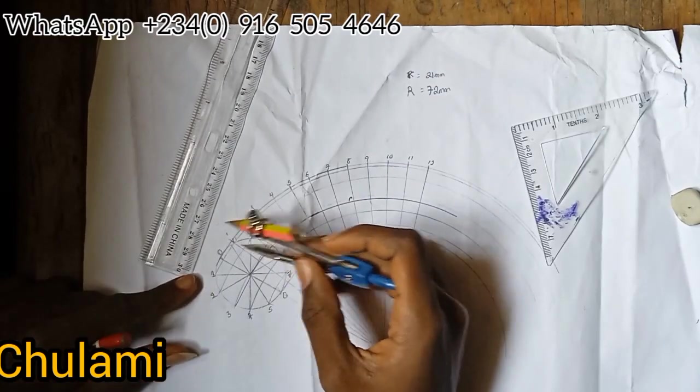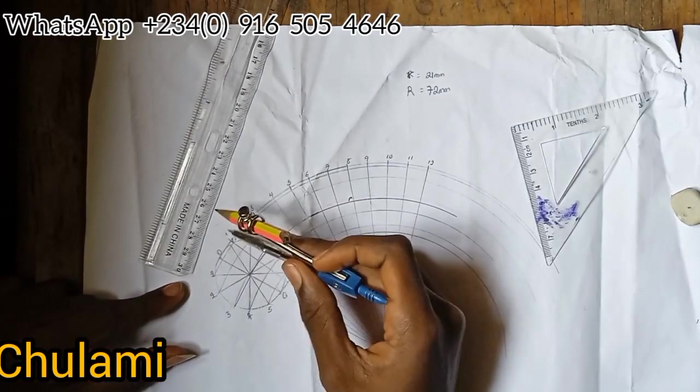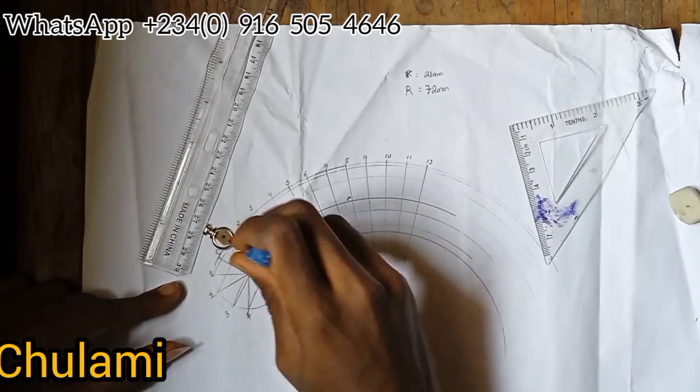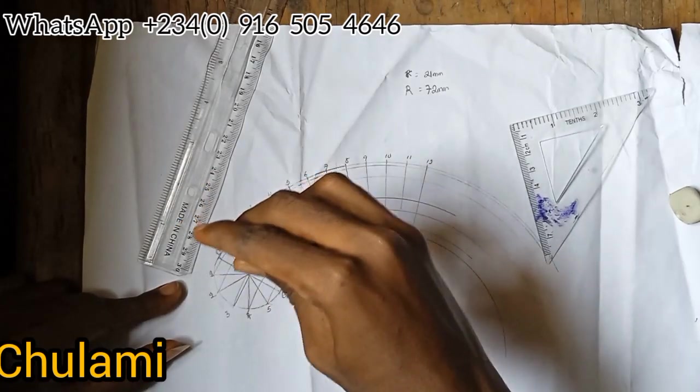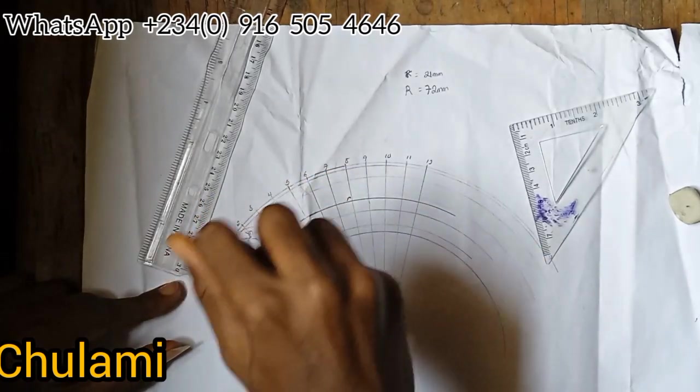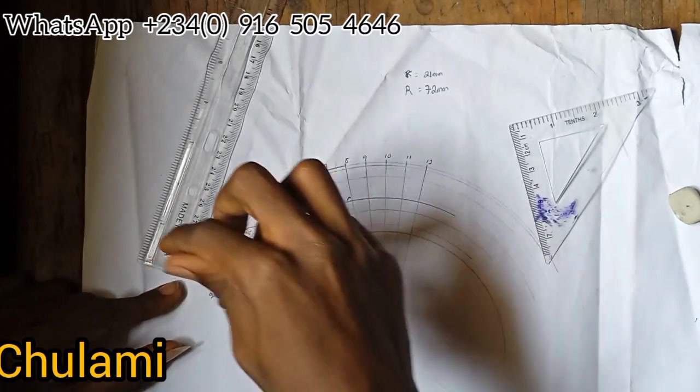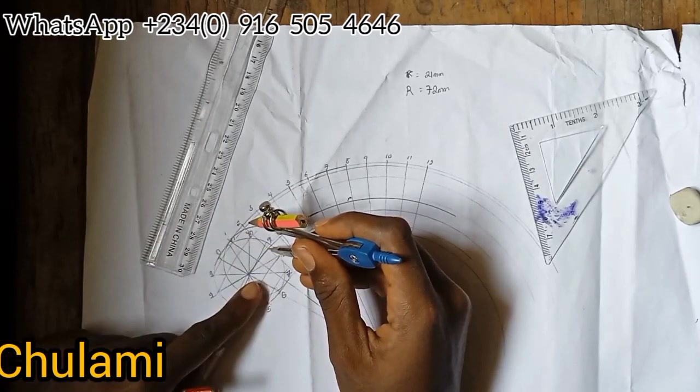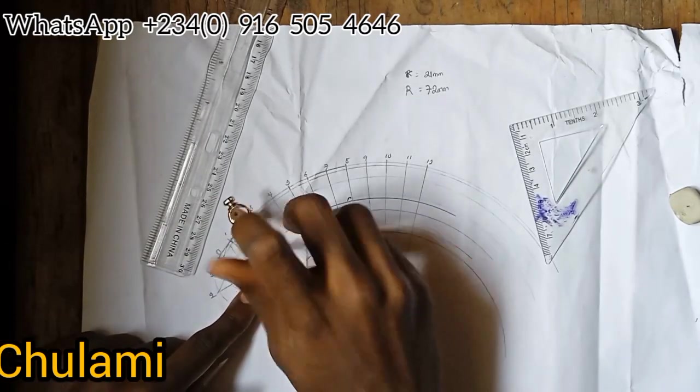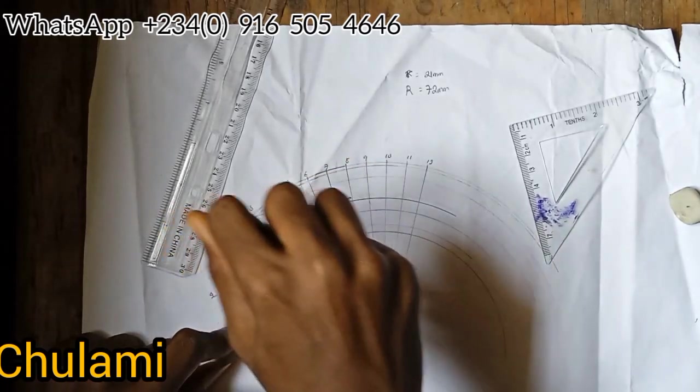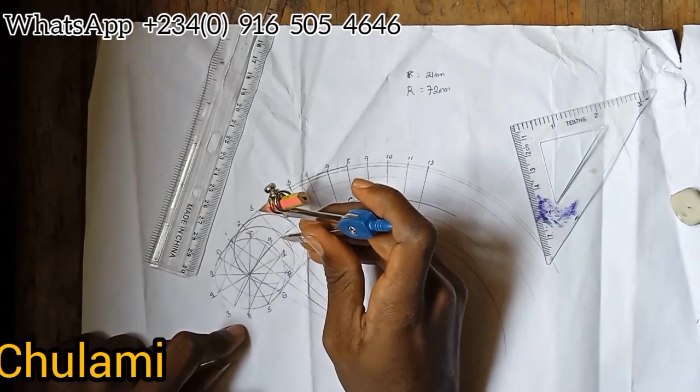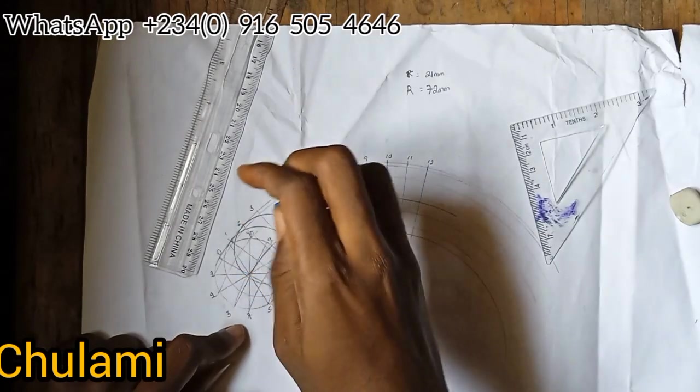Now where one and the center arc meet, I'll pin there and get to one and draw a circle. Where the center arc and line two meet, I'll pin there and get to two and draw a circle. I'm repeating the same process for three, four, five, six till 12.